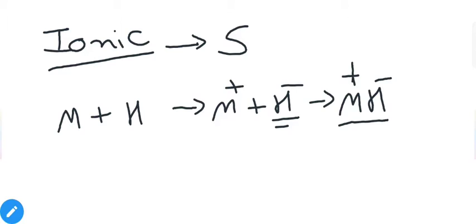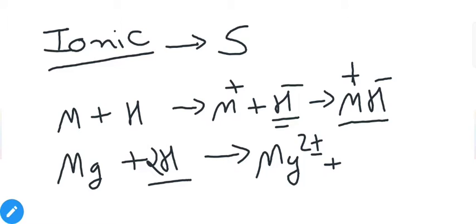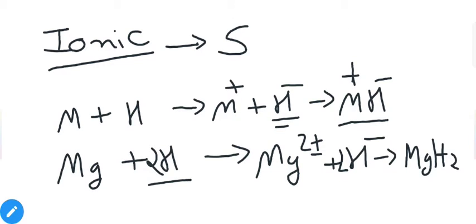For example, take magnesium. Magnesium combines with hydrogen. Since Mg has two extra electrons beyond a noble gas-like electronic configuration, it loses two electrons to produce Mg²⁺ ion. The two released electrons are accepted by two hydrogen atoms to produce H⁻, giving us MgH₂. This is an example of an ionic hydride.